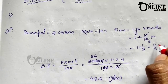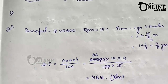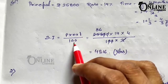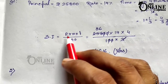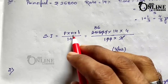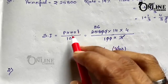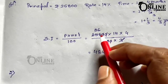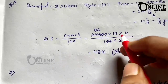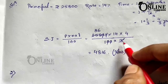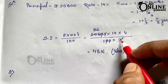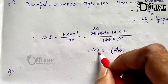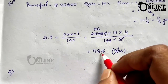According to the formula of simple interest, SI equals PRT by 100, where P equals principal, R equals rate, and T equals time. Putting in the values: 25800 into 14 into 4, divided by 100 into 3. The zeros cancel out, and the final value equals rupees 4816, which is the simple interest.